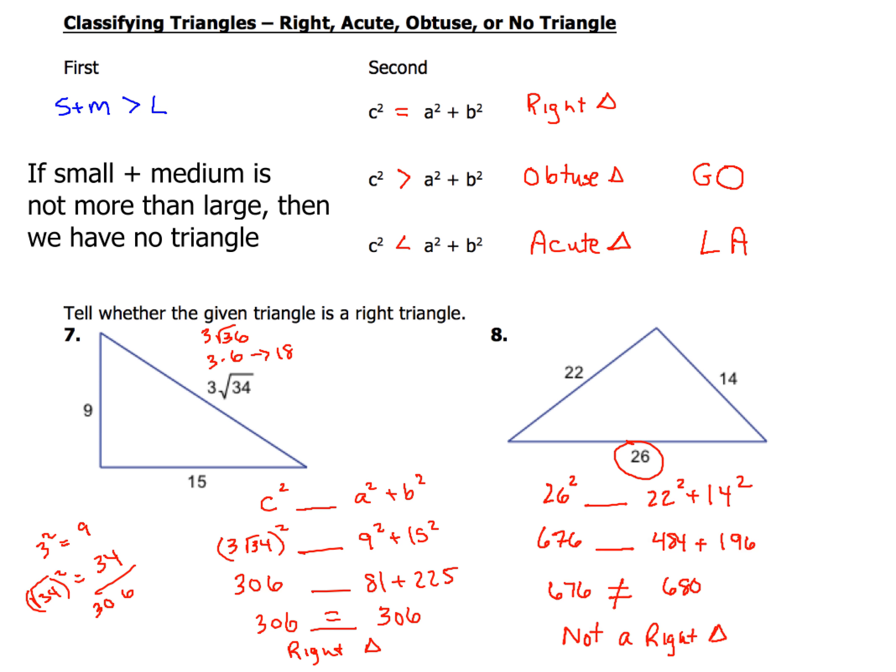676, we compare that to the sum of 484 and 196, and when we find that sum, we get 680, and 676 is definitely not equal to 680. So in this example, number 8, this is not a right triangle.